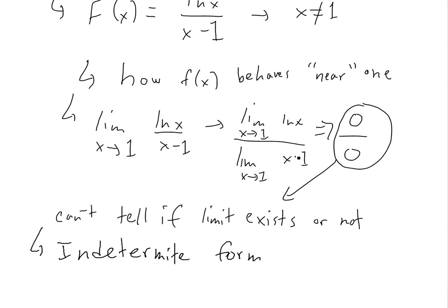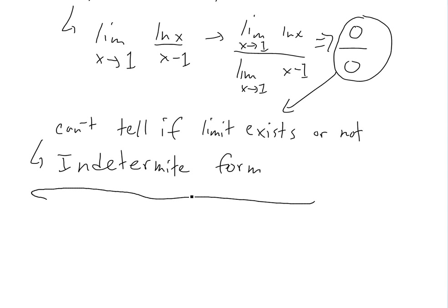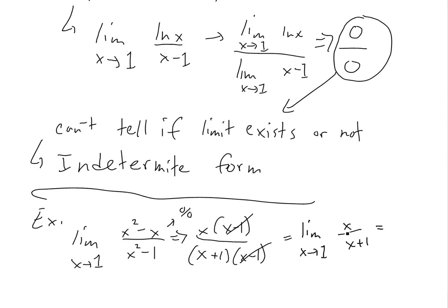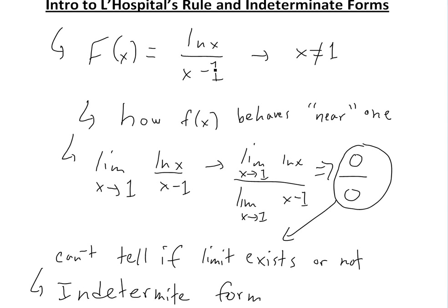Before I show that, if you had a function with common factors — like rational functions — for example, the limit of (x² - x) / (x² - 1). If you put 1 in here, you also get 0 over 0, except with this one you can factor: the numerator is x(x - 1) and the denominator is (x + 1)(x - 1). Cancel the like terms and you get the limit of x / (x + 1), which equals 1/2.